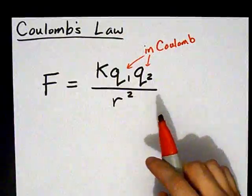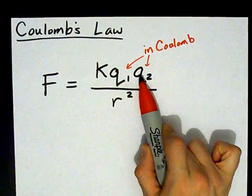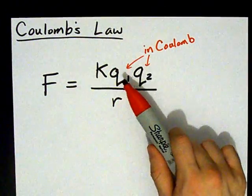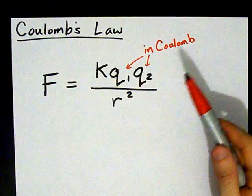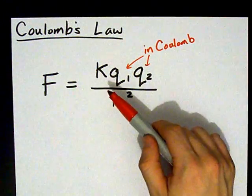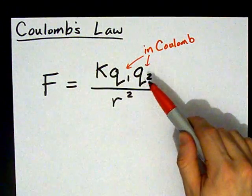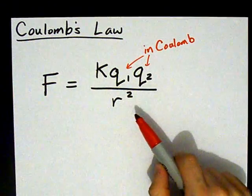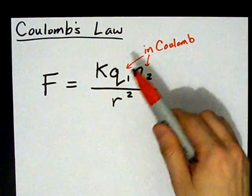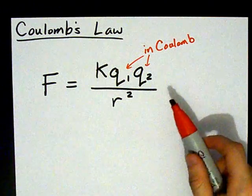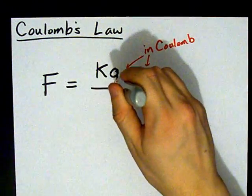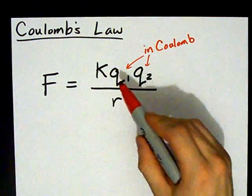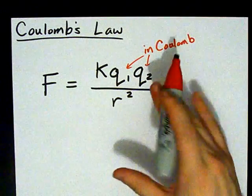Notice, if either of these is zero, i.e., if one of these is neutral, there's no attraction at all, because K times Q1 times zero is zero. And I don't care what R is, it's still going to be zero overall. So, you need a charge on both of the particles for Coulomb's Law to actually apply.